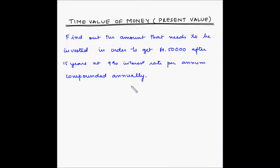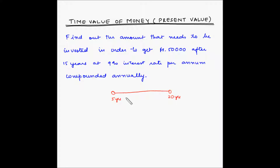Let us consider another example of time value of money where we will look at the concept of present value. Consider a case where your child is currently 5 years old and you want to make an investment so that you get an amount of money when the child is 20 years old. Basically you want to make an investment to save some money for the child's college education.